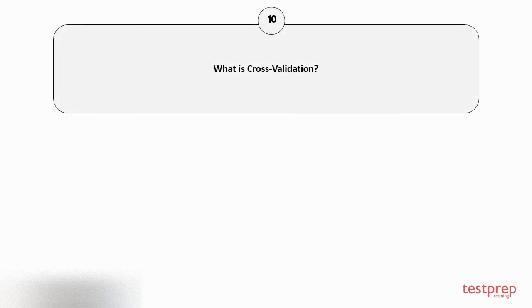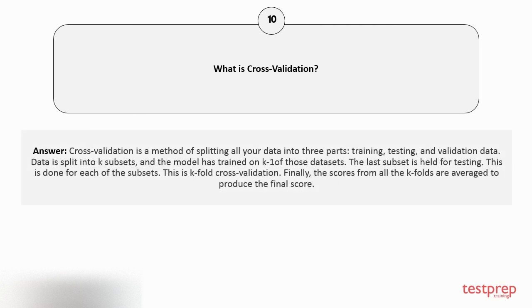Question number ten: What is cross-validation? Cross-validation is a method of splitting all your data into three parts: training, testing, and validation data. Data is split into K subsets, and the model is trained on K minus one of those datasets. The last subset is held for testing. This is done for each of the subsets. This is K-fold cross-validation. Finally, the scores from all the K-folds are averaged to produce the final score.